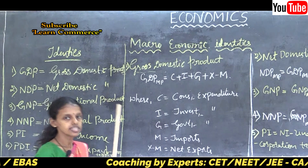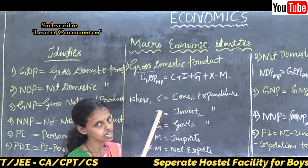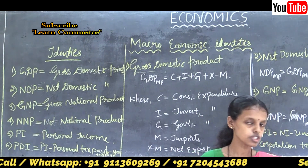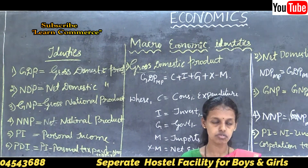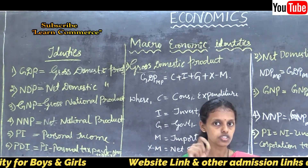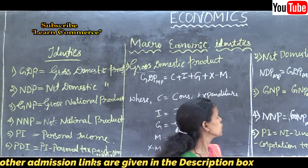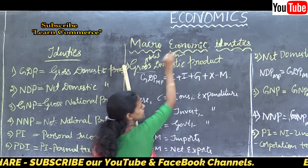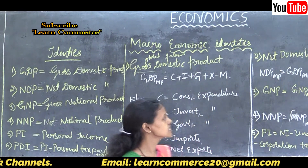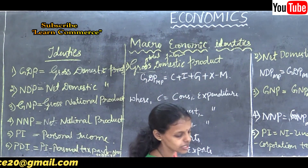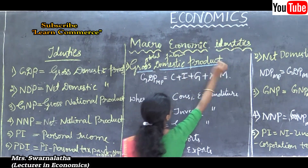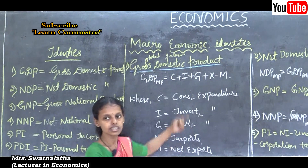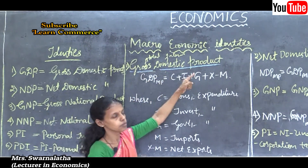Let us see one by one how these are included while calculating national income. The first one is Gross Domestic Product. GDP means Gross Domestic Product — the total amount of goods and services produced in a domestic country. Gross means total, domestic means internal. Total internal product produced in a country is said to be the Gross Domestic Product.